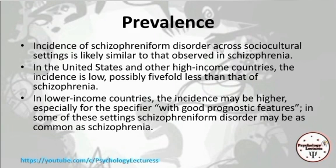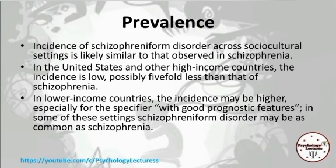The incidence of Schizophreniform Disorder across socio-cultural settings is likely similar to what is observed in Schizophrenia. In the United States and other high-income countries, the incidence is low — 5 or less. In lower-income countries, the incidence is higher, with good prognostic features.